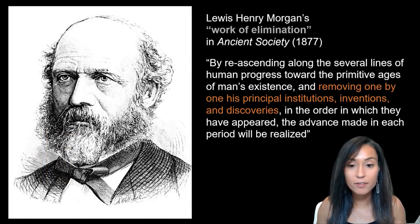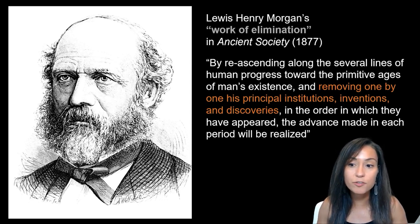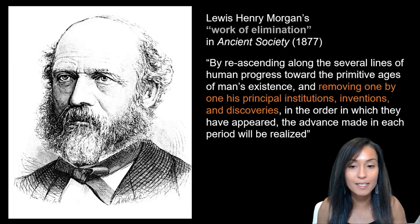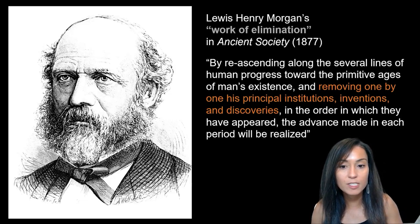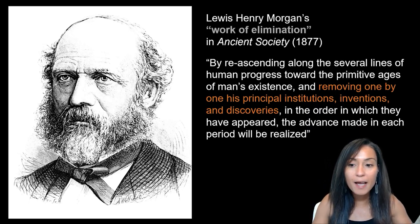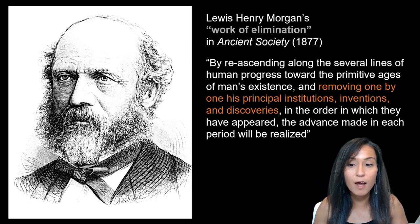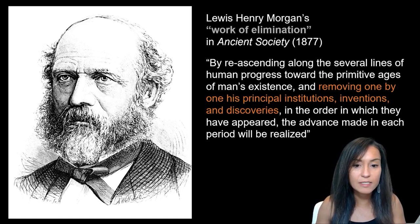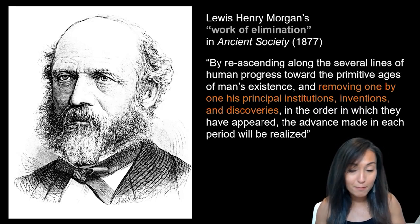With the advent of modern anthropology during the 18th century, European classifications were given the weight of scientific facts. 19th century anthropologists and archaeologists would work backwards from the present in order to reconstruct the evolution of human society. Basically, the idea was that Western civilization was modern and everyone else was primitive.